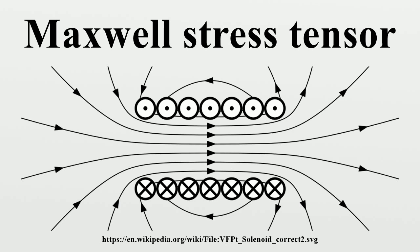In physics, the Maxwell stress tensor is the stress tensor of an electromagnetic field, as derived above in SI units. It is given by a formula where epsilon-zero is the electric constant and mu-zero is the magnetic constant. E is the electric field, B is the magnetic field, and delta-ij is the Kronecker delta.